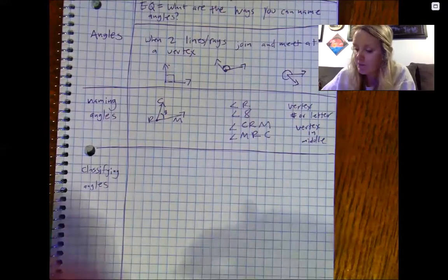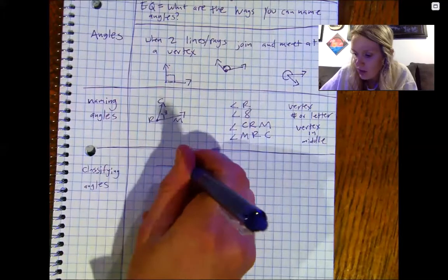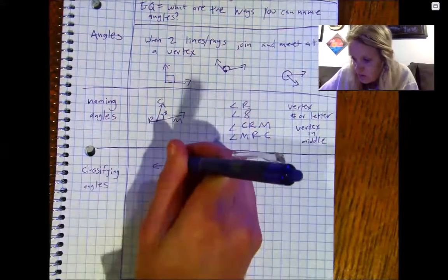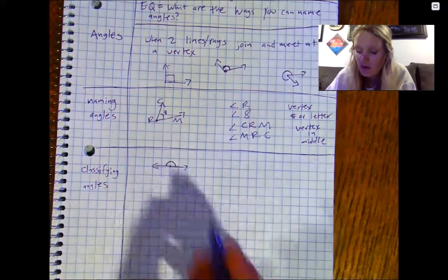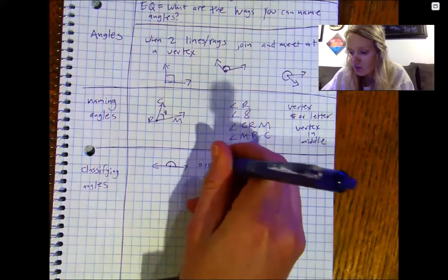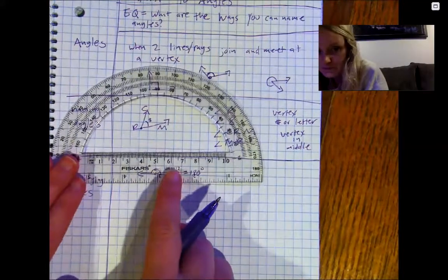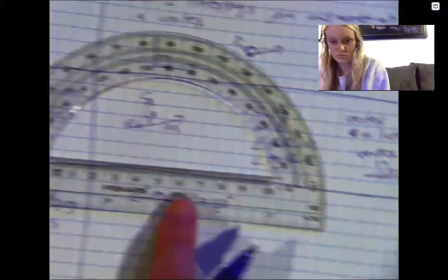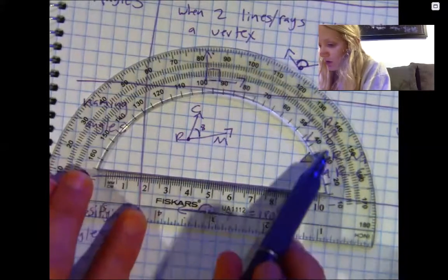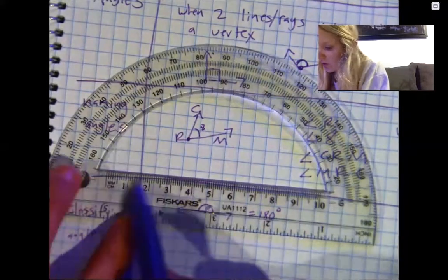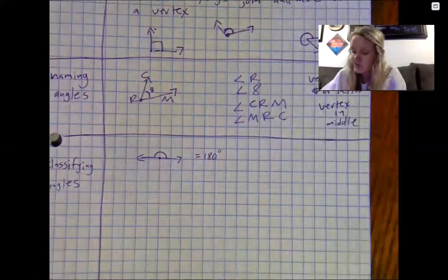Just as a reminder, there are some important angles to always know. If you have a straight line, that is 180 degrees. If I were to use my protractor, I'd put the hole on the vertex, line up the black line, go on the inside numbers all the way around, and see that the line goes through the 180 mark. We call this a straight angle.